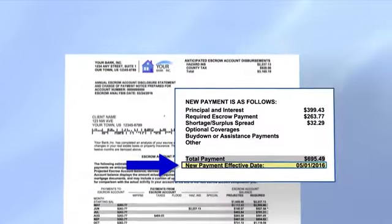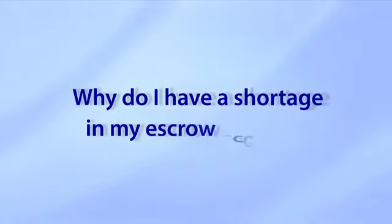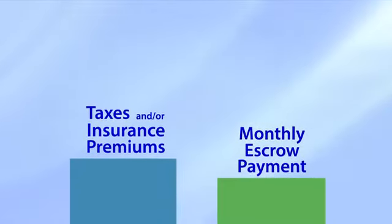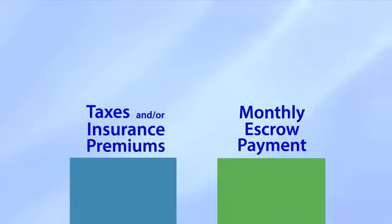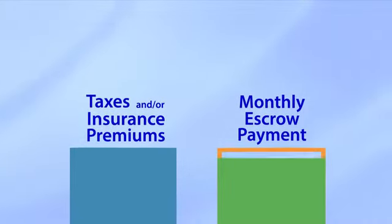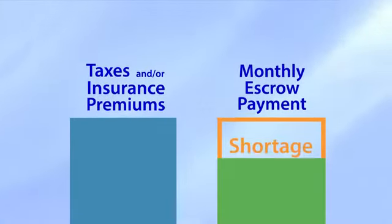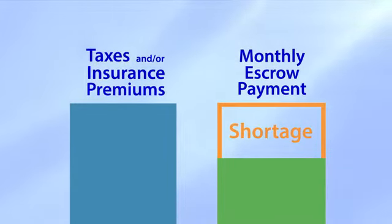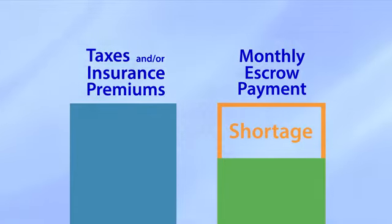The most common escrow question is: why do I have a shortage in my escrow account? Monthly escrow payments for each year are estimated by analyzing what was paid during the previous year. A shortage happens when increases in your taxes and/or insurance premiums occur, such that your monthly escrow payment is too low to maintain the minimum required balance in your escrow account.